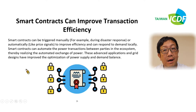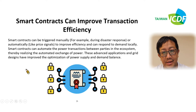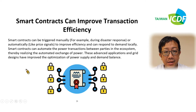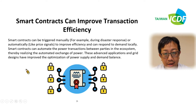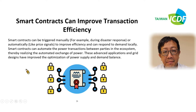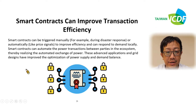Smart contracts can also improve transaction efficiency. Smart contracts can be triggered manually — for example, like disaster response — or automatically, like pricing signals, to improve efficiency and respond to demand locally. Smart contracts can automate power transmission and contraction transactions between parties in the ecosystem, thereby realizing the automatic exchange of power. Advanced application and grid design have improved optimization of power supply and demand balance.